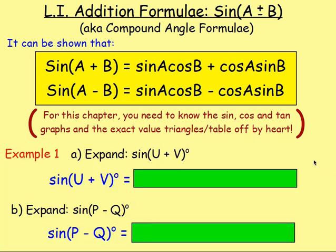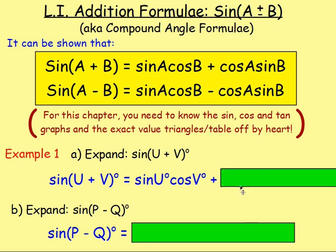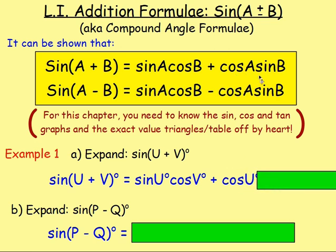Example one: expand sine U plus V. If you've got the sine of something plus something, you can expand that. So sine U plus V — we're just swapping A with U and B with V. So instead of sine A, we'll have sine U. Instead of cos B, we'll have cos V. Then we're still adding, so that'll be plus. Then instead of cos A, it's going to be cos U, and instead of sine B, we'll have sine V.